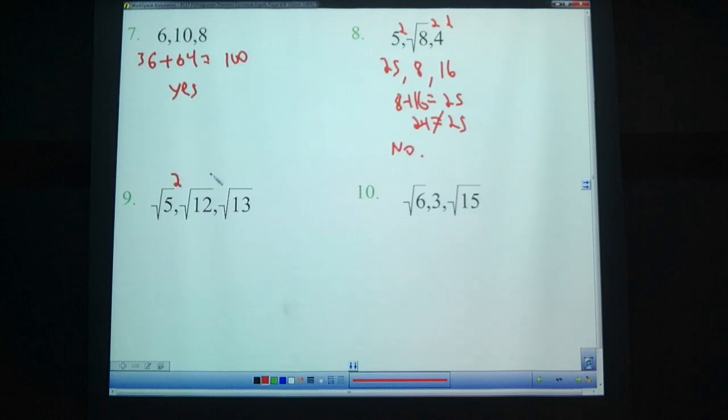Square root of 5, square root of 12, square root of 13. You might think it's a Pythagorean triple. But that's an easy trap to fall into. Square that, 5. Square that, 12. Square that, 13. 5 plus 12 does not equal 13. It equals 17. And 17 is not the same as 13. So not right.